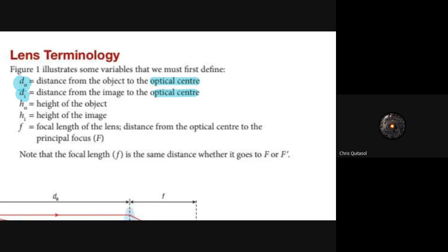h₀ is the height of the object, hᵢ is the height of the image, and f is the focal length of the lens — the distance from the optical center to the principal focus. Note that the focal length f is the same distance whether it goes to F or F prime. This means the focal length will always be the same regardless of which side of the lens it is on.